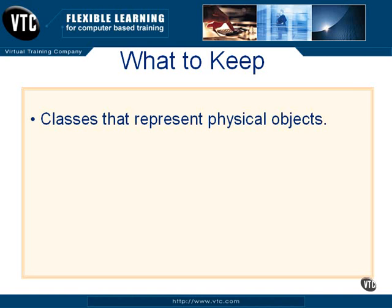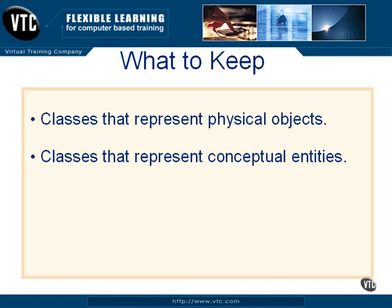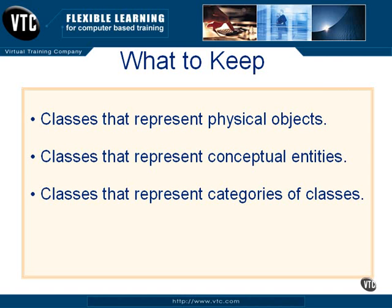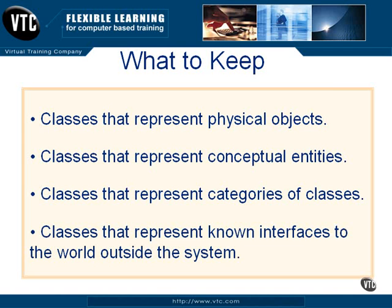Here's a checklist that will help you do that. Keep classes that represent physical objects — those tangible things we were talking about earlier. Keep classes that represent conceptual entities. Also keep classes that represent categories of classes; these can become super classes that will be useful for things like generalization. And finally, keep classes that represent known interfaces to the world outside of the system.